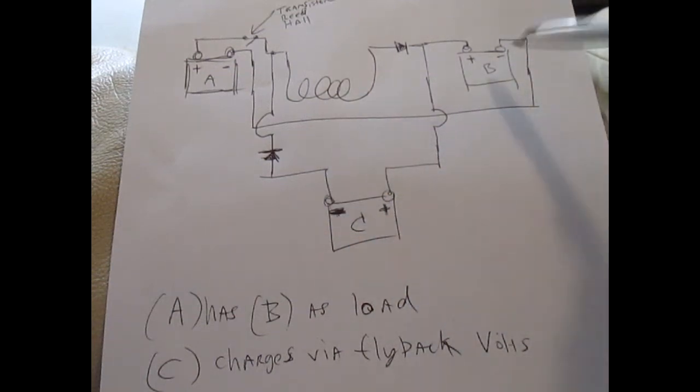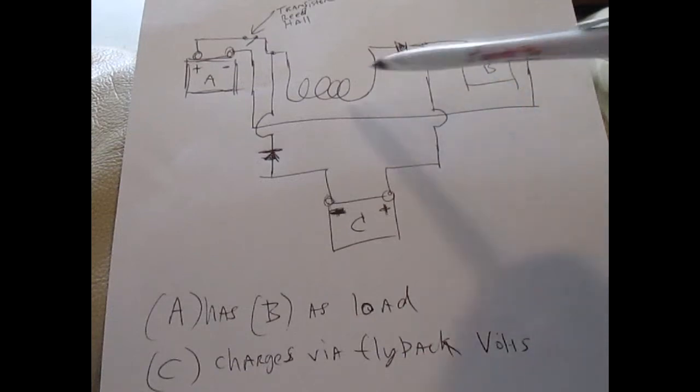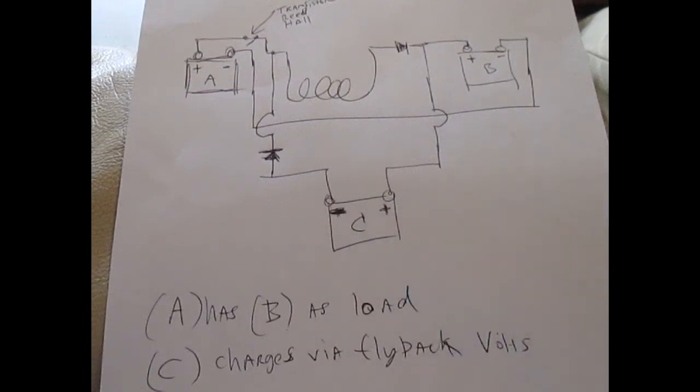So as this battery loses impedance and gains continuity, this coil will receive more energy, and so will battery C.